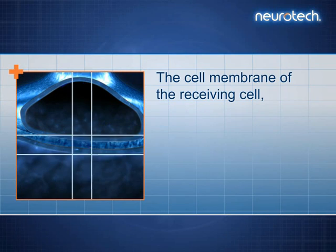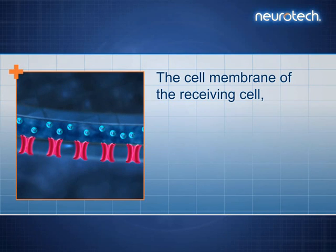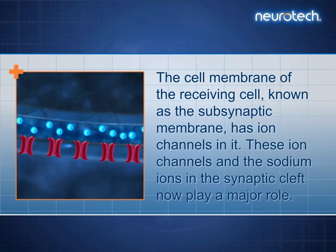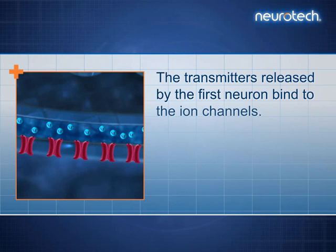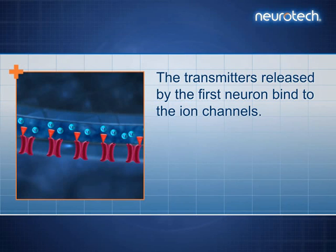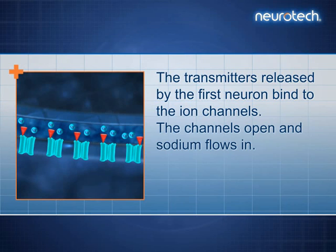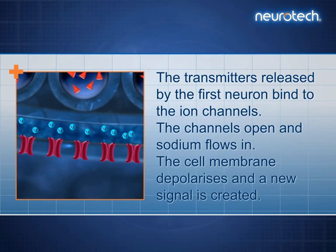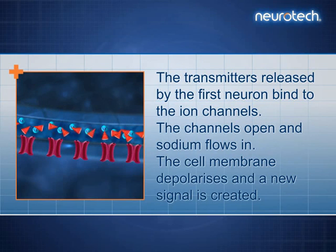The cell membrane of the receiving cell, known as the sub-synaptic membrane, has ion channels in it. These ion channels and the sodium ions in the synaptic cleft now play a major role. The transmitters released by the first neuron bind to the ion channels. The channels open and sodium flows in. The cell membrane depolarizes and a new signal is created.